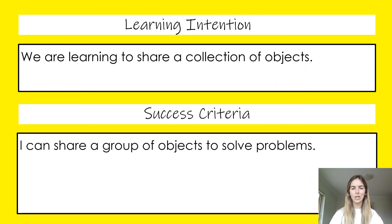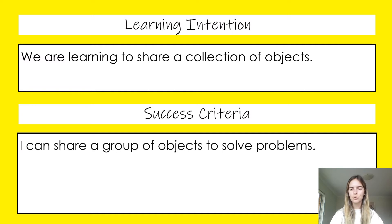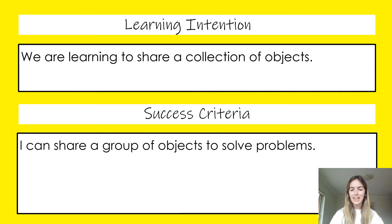Let's take a look at our learning intention and success criteria for today. Our learning intention is that we are learning to share a collection of objects. Our success criteria is that I can share a group of objects to solve problems. This was the same as yesterday and will be the same tomorrow because we really need to practice our sharing, doing it one by one so that we know it is equal. Now I'm going to show you a read-aloud story called 'When the Doorbell Rang' — I love this book because it's all about sharing equally.